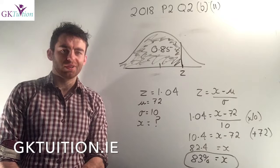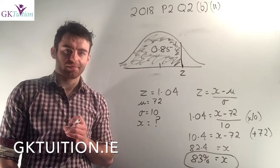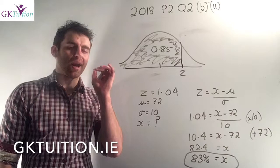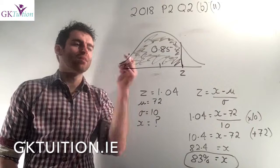In part B2 we're told that the top 15% of students in the English class were given an A, and we need to figure out what percentage a student would have needed in order to be in the top 15%. To start, this is the exact same process as part A — using the log tables — except it's the opposite direction to what we did in part B1.